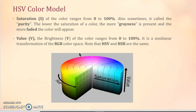The brightness of the color ranges from 0 to 100%. It is a nonlinear transformation of the RGB color space. Note that HSV and HSB are the same.